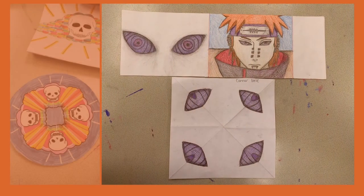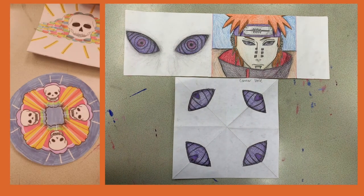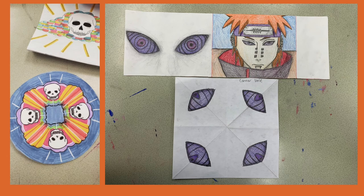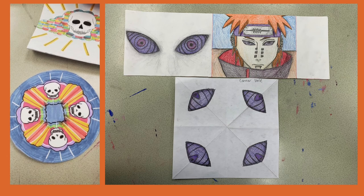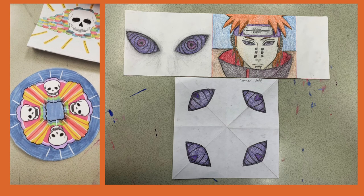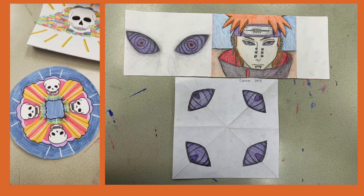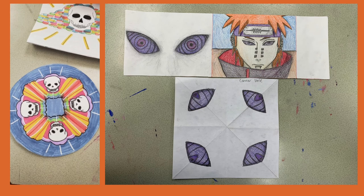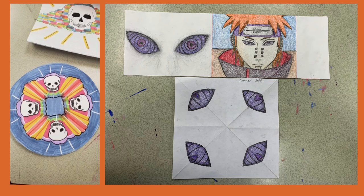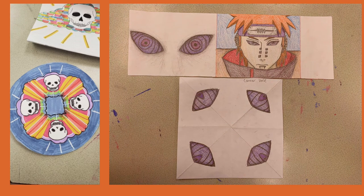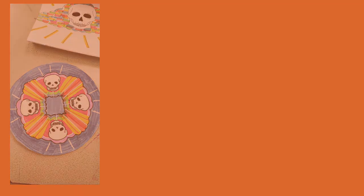When I teach the principle of art, balance, I like to use a CD cover. A CD cover has three different sides, and balance has three different types. You have formal balance, which is a mirror-like reflection. Informal balance, where it is asymmetrical and not the same on both sides. And you have radial balance, which is formal balance however you slice it, like a pizza or a pie.